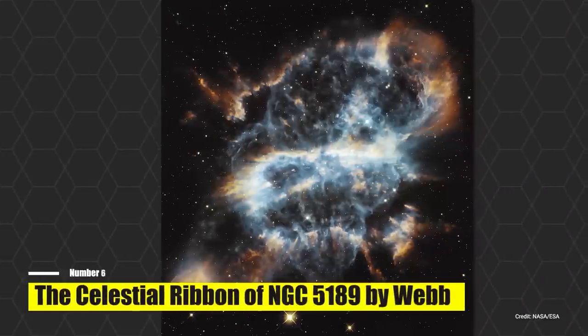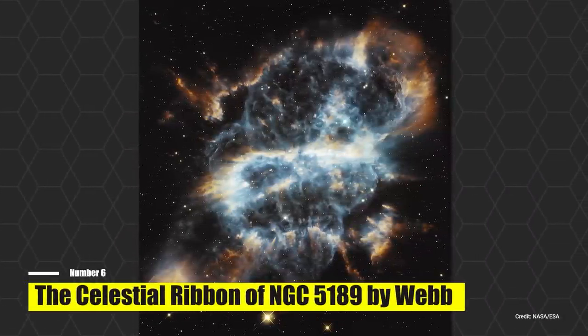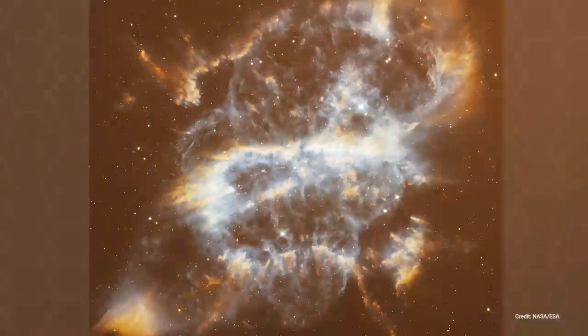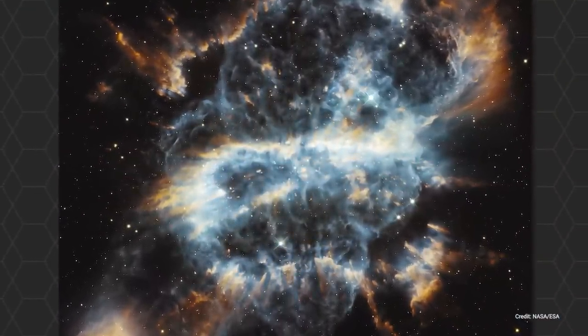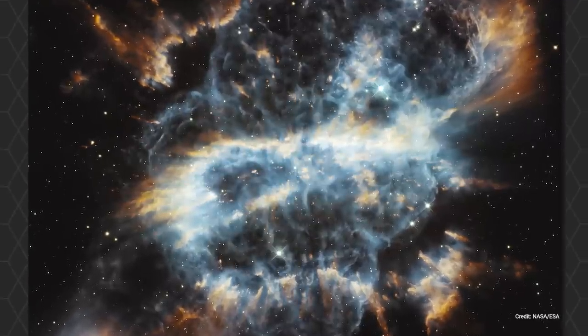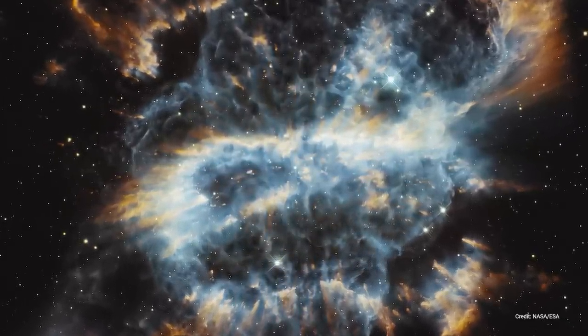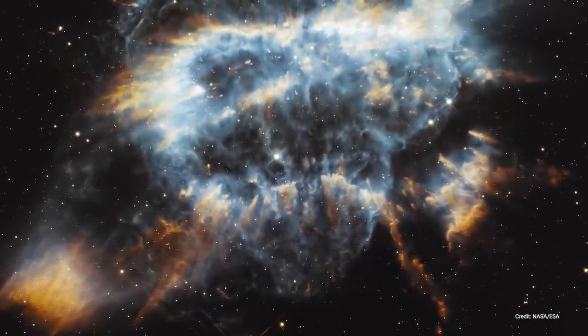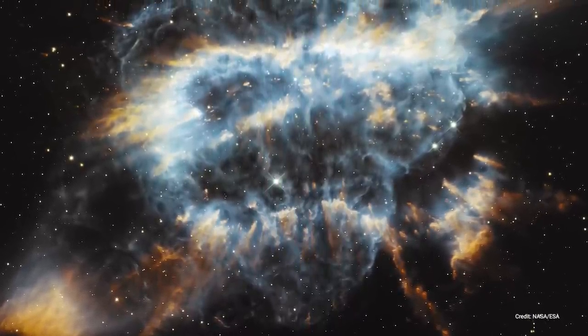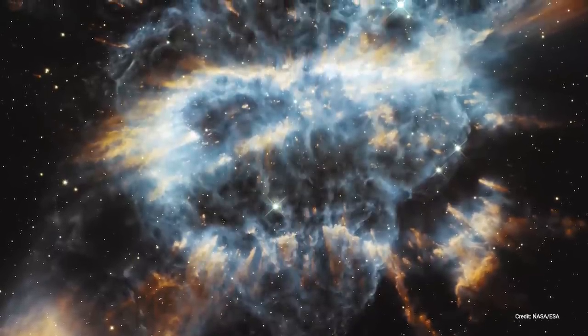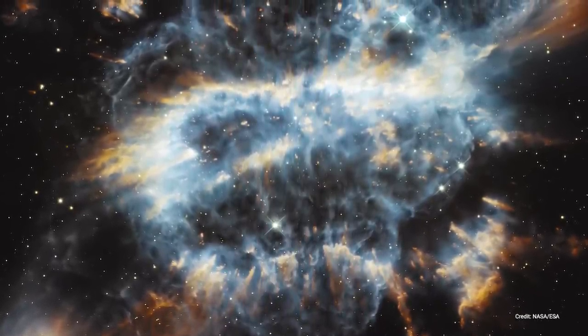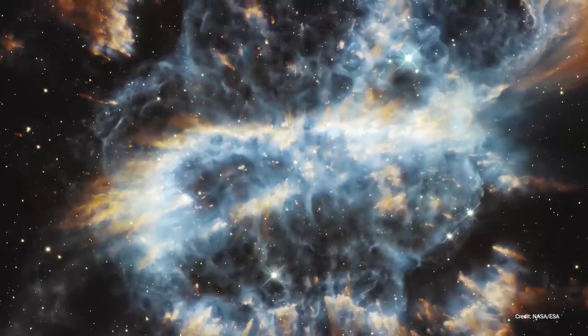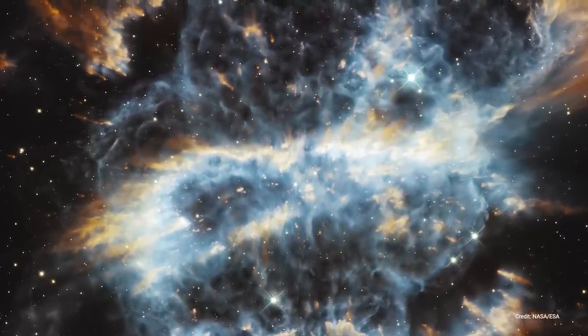Number 6, the Celestial Ribbon of NGC 5189 by Webb. The James Webb Space Telescope marks the holiday season with a remarkable image of the planetary nebula, NGC 5189. The detailed structure of this cosmic spectacle bears a striking resemblance to a giant, brightly-hued ribbon unfurling in the vast expanse of space. NGC 5189, also known as the Spiral Planetary Nebula, is a complex and intriguing celestial object located in the constellation of Musca, the fly. While the term planetary nebula might suggest that this object has something to do with planets, it doesn't. The term comes from the round, planet-like appearance these objects have when seen through small optical telescopes. This particular nebula is noteworthy for its unusual, intricate structures.